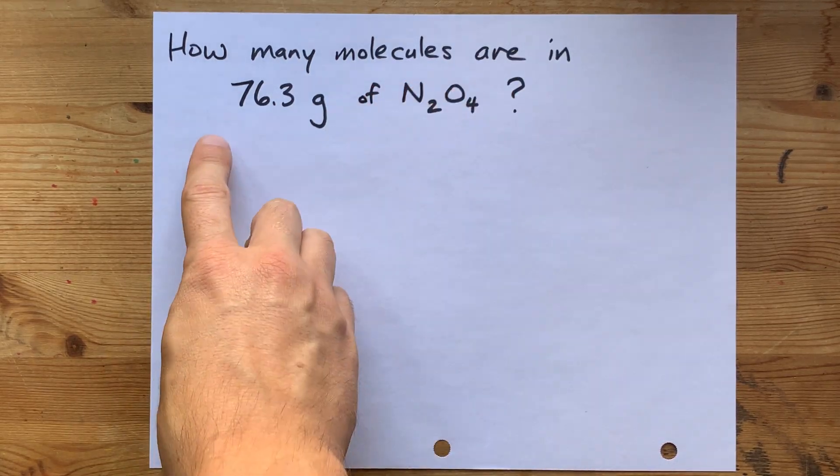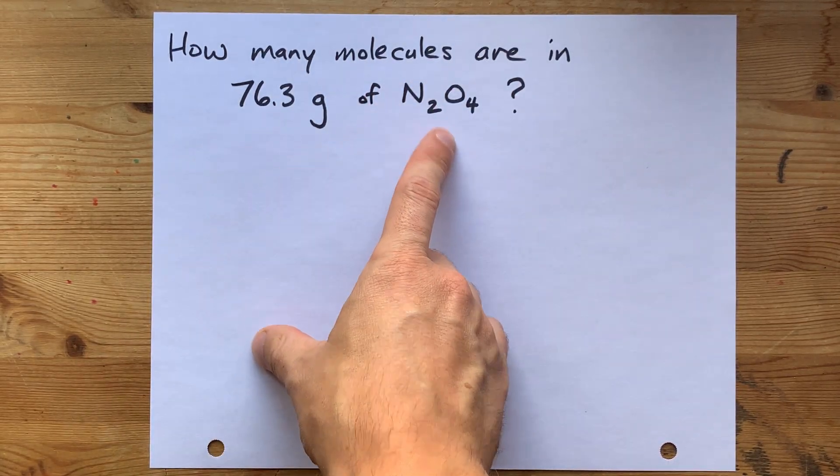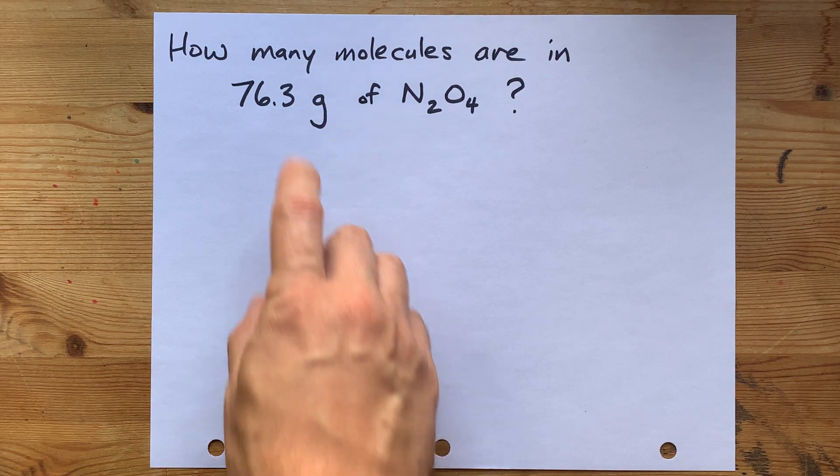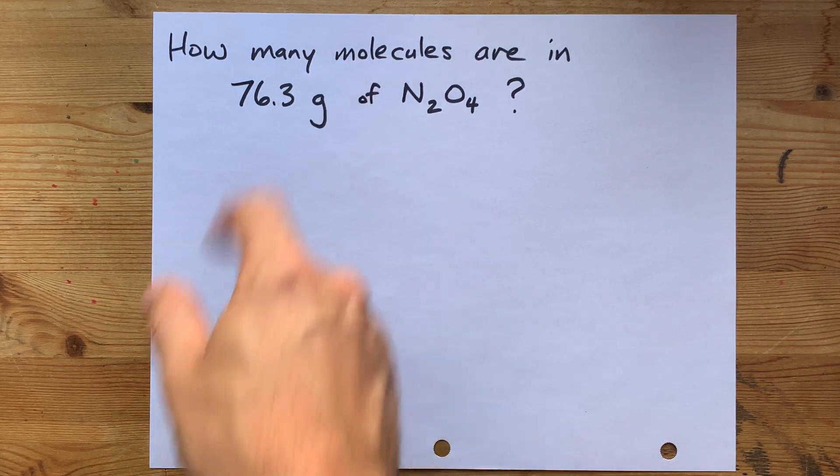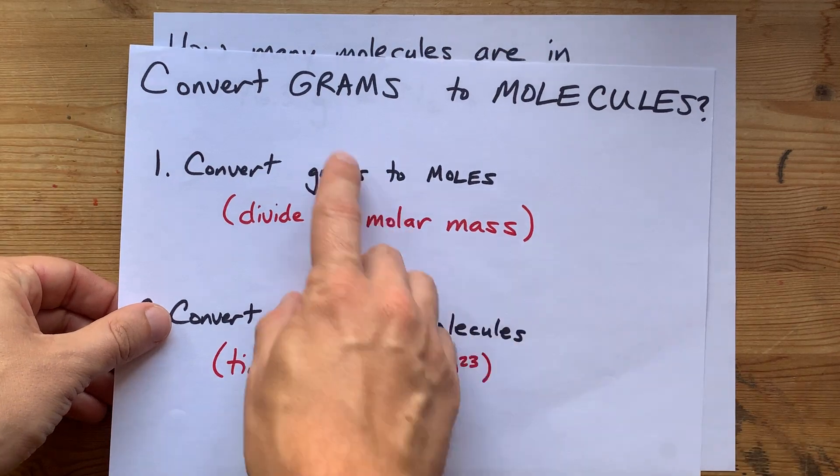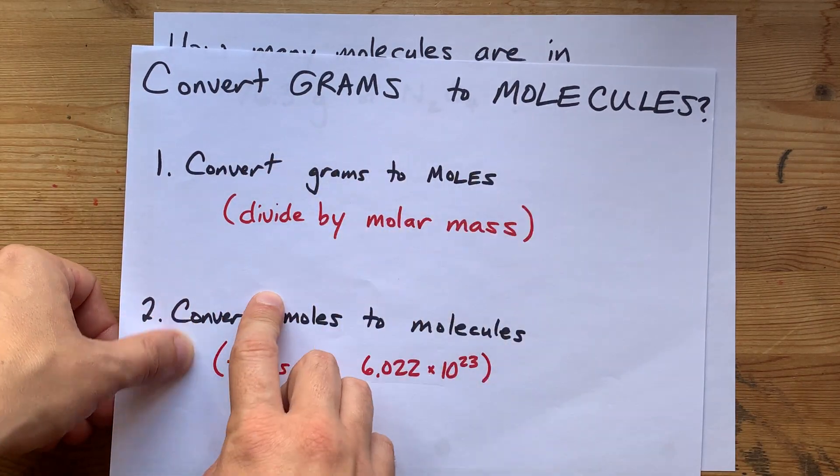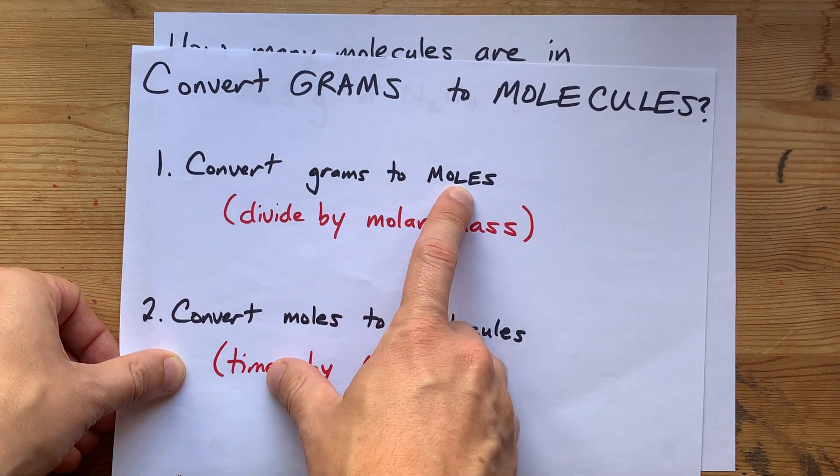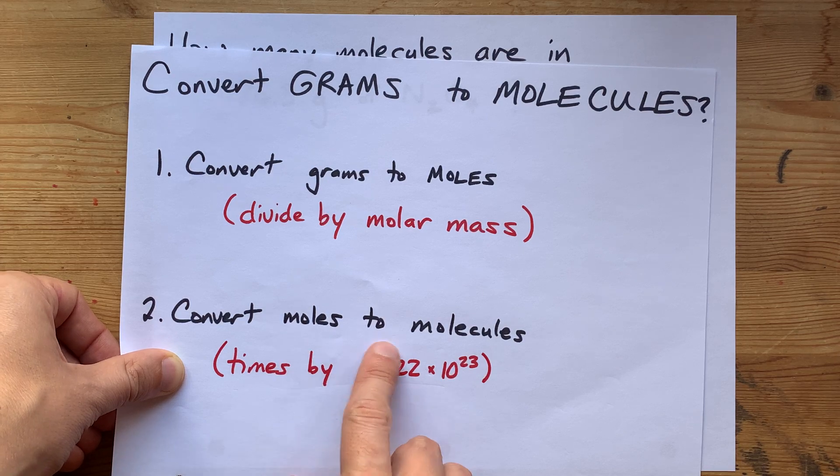How many molecules are in 76.3 grams of N2O4? Well, we're given grams and we're asked for molecules, so we're going to convert grams to molecules by converting grams to moles, and then moles to molecules.